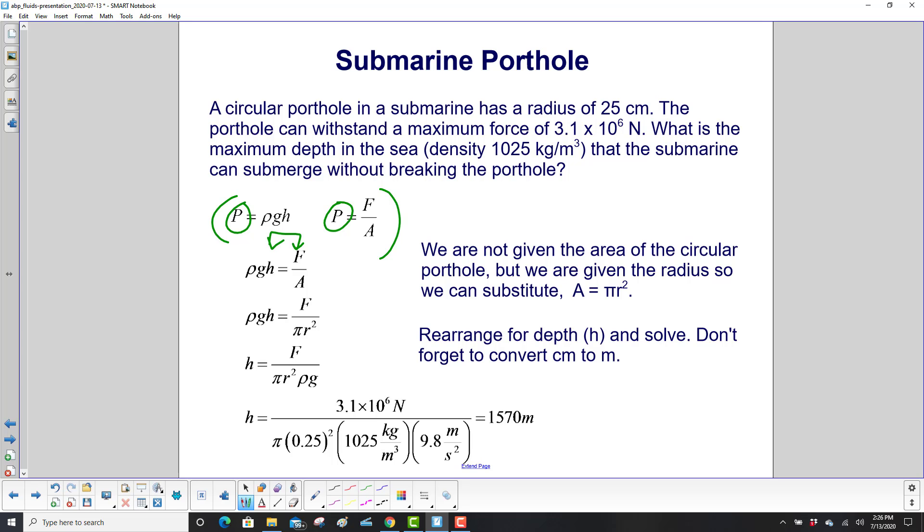The area of a circular porthole is πr². We want to solve for h, the depth of the water. Dividing both sides by ρg gives us h = F/(ρg × πr²).